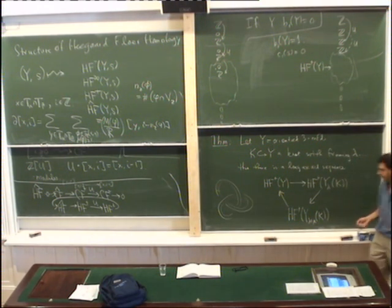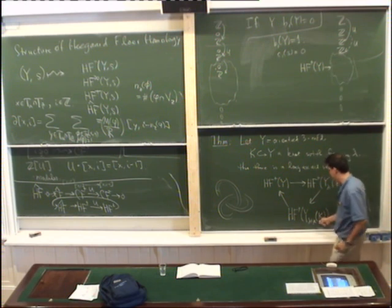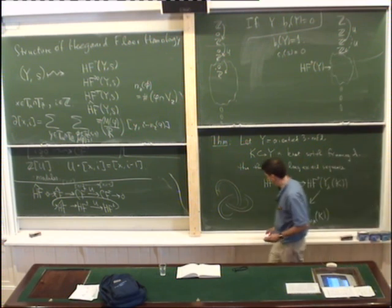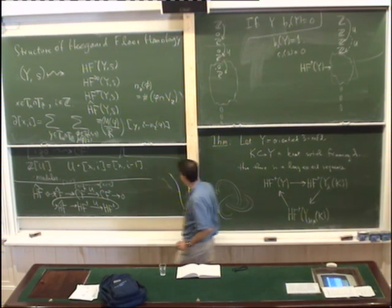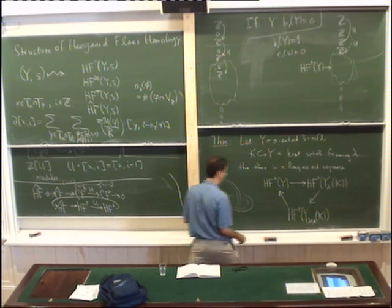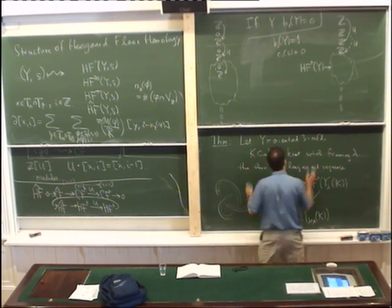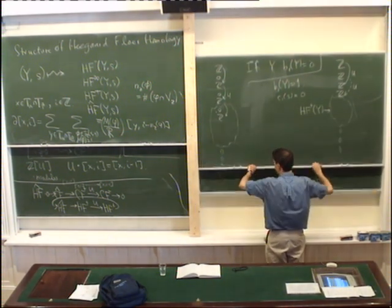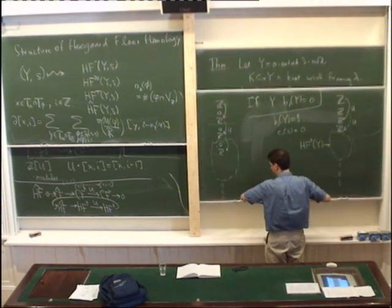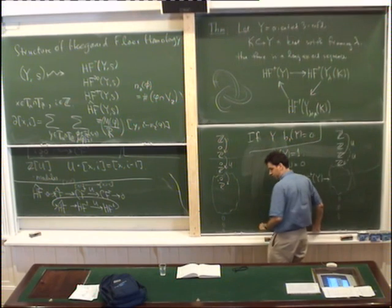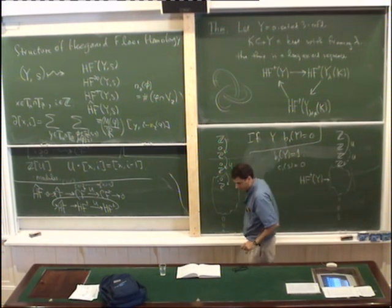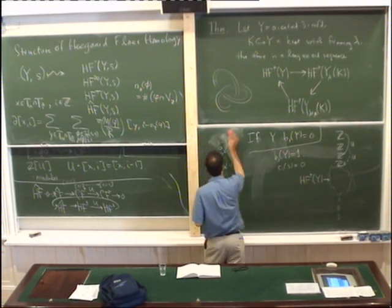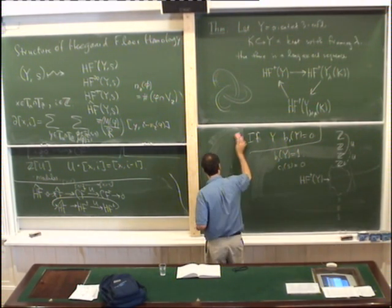If K is a knot with framing lambda, then there is a long exact sequence relating HF plus of Y, HF plus of Y_lambda(K), and HF plus of Y_{lambda+mu}(K). Here Y_lambda(K) denotes the 3-manifold obtained by doing lambda-framed surgery on K — that is, we delete the solid torus and replace it with another solid torus whose meridian is the curve lambda.